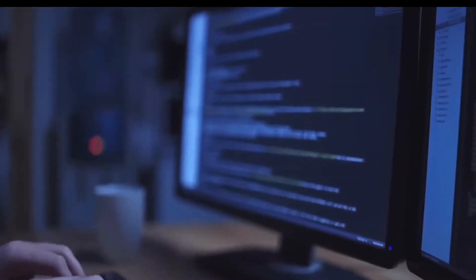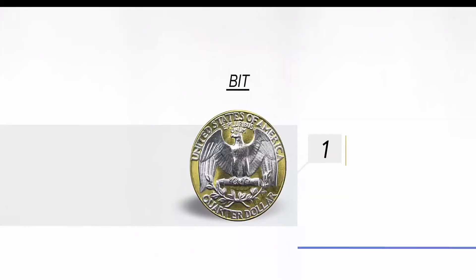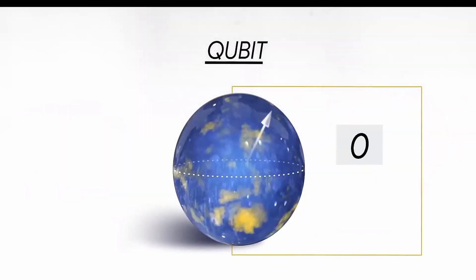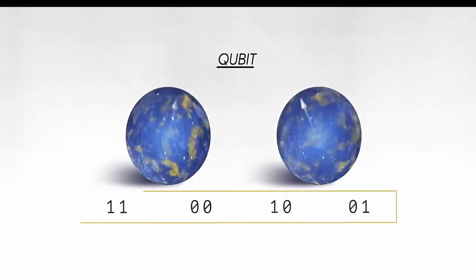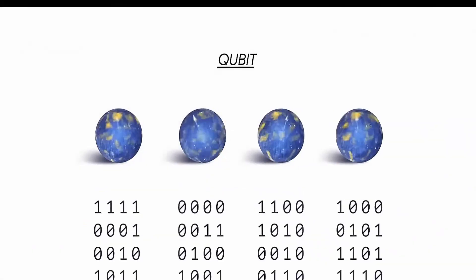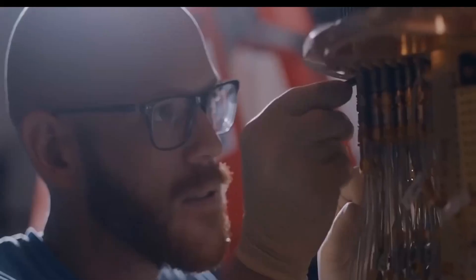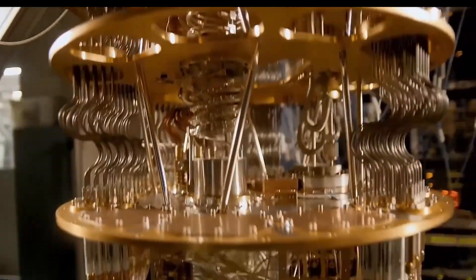Here's a fascinating fact. While a classical bit can be in one of two states, zero or one, a quantum bit or qubit can be in a superposition of states, embodying both zero and one simultaneously. This is the secret behind the astronomical computational power of quantum machines. But could this unrivaled power ignite a new kind of competition, a global race not just for technological supremacy but for quantum dominance? Is the advent of quantum computing sparking a new arms race?